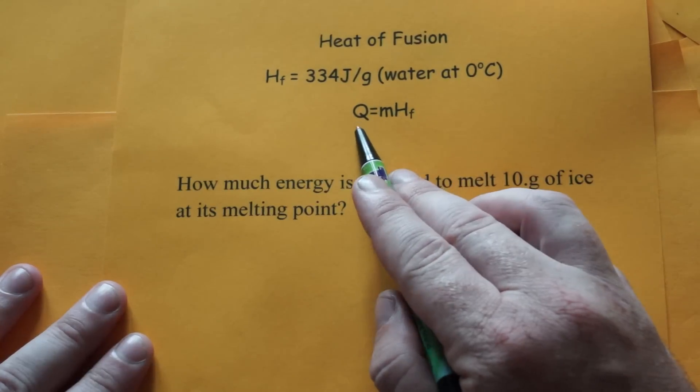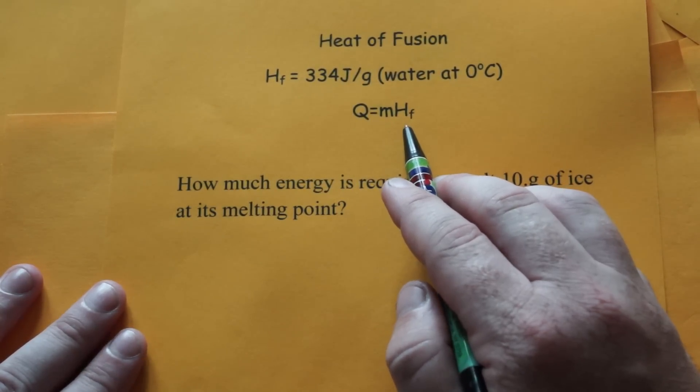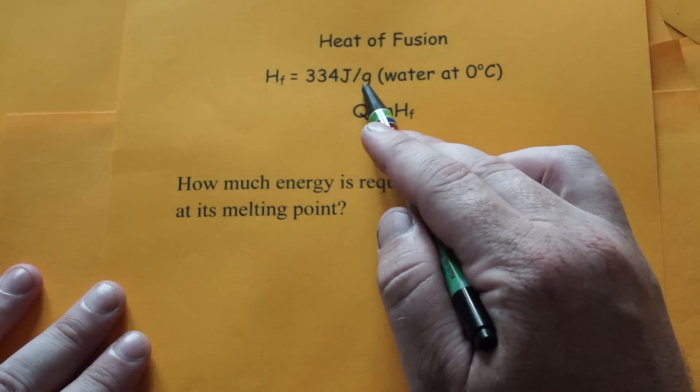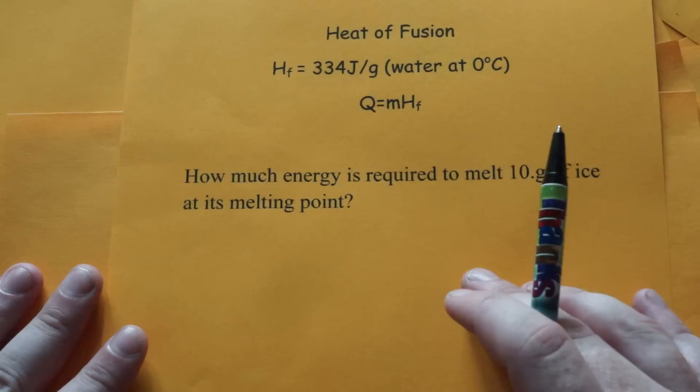Here's the equation: Q equals m times H_f, where Q is heat, m is mass, and H_f is the heat of fusion. To determine the heat, multiply the mass by the heat of fusion. Since it's joules per gram, multiply by the number of grams you have to find how much heat is required to melt or freeze that amount of water or ice.